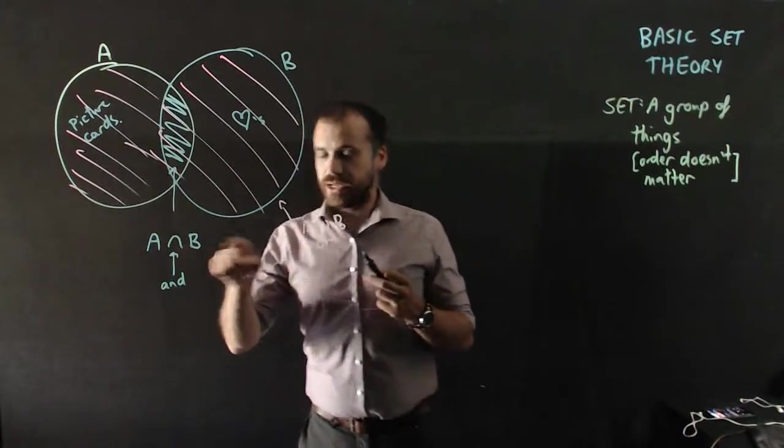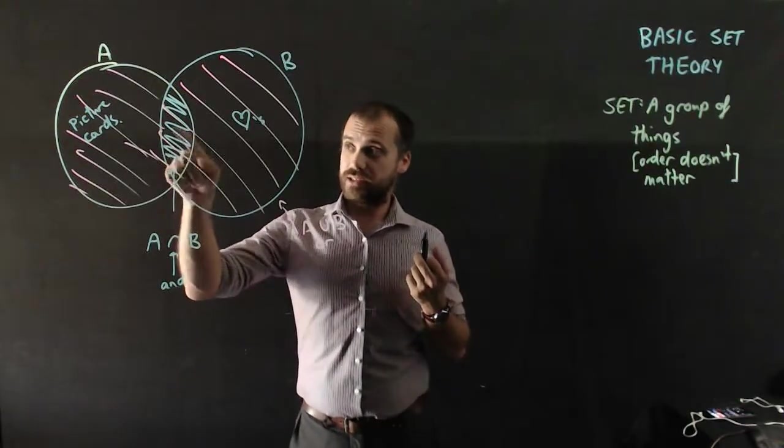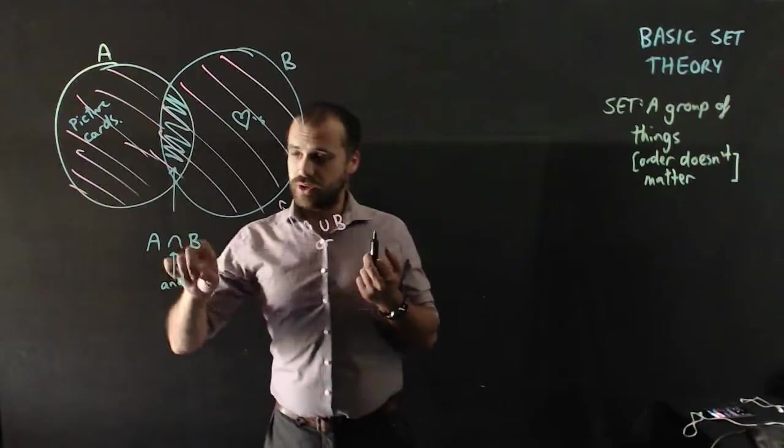A intersection B would be the King of Hearts, the Queen of Hearts, the Jack of Hearts, the Ace of Hearts. There's going to be four items inside of A intersection B.